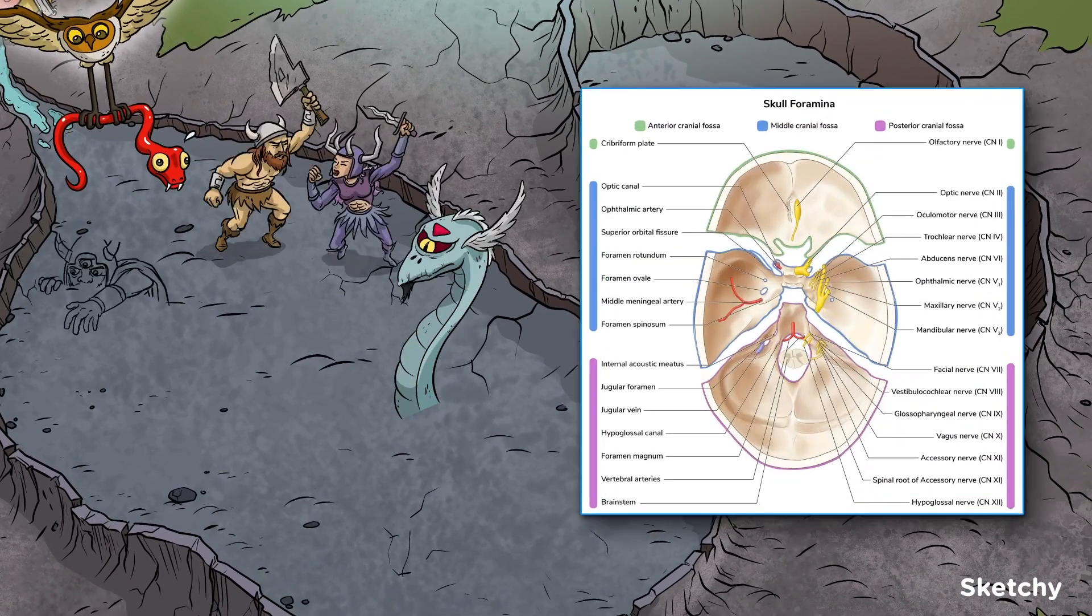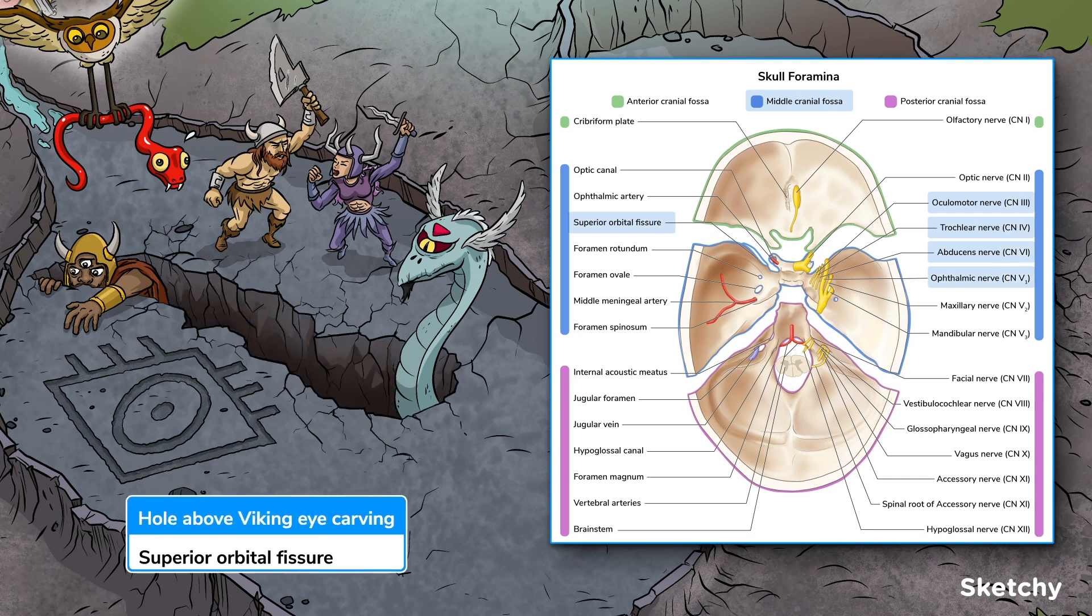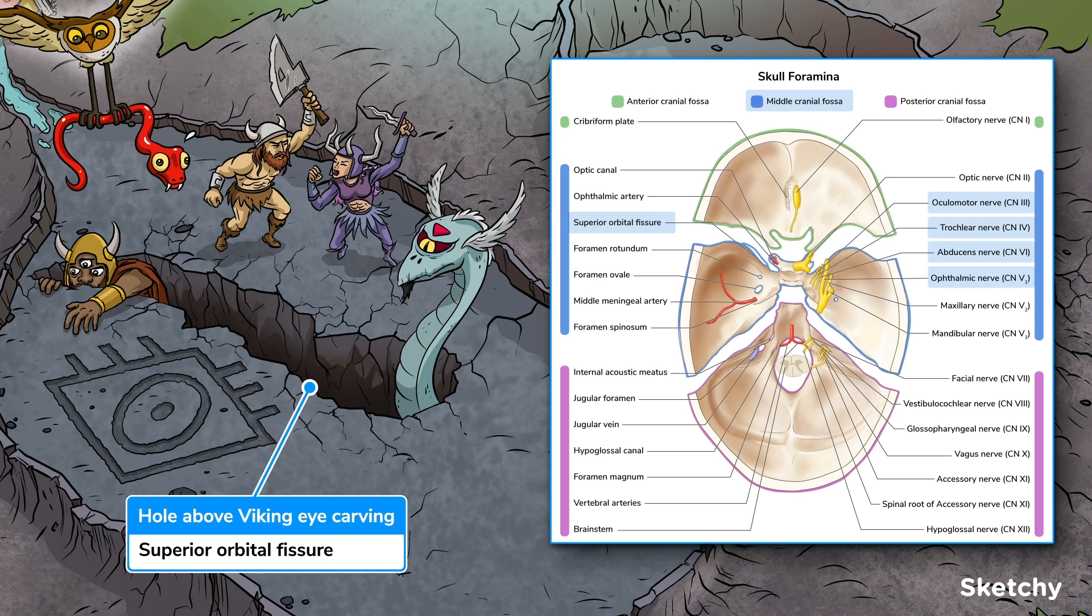The next opening is the superior orbital fissure, denoted here by this large hole right above the Viking eye carving. Cranial nerves 3, 4, 6, and the ophthalmic nerve, the first branch of cranial nerve 5, pass through the superior orbital fissure to enter into the orbital cavity.